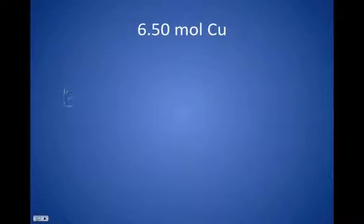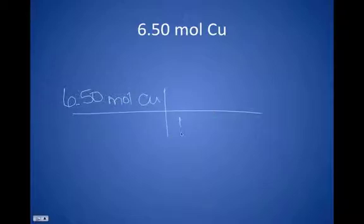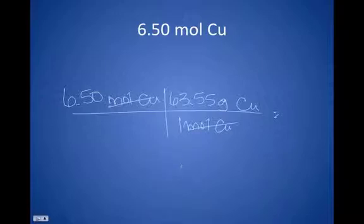Next up, we've got 6.5 moles of copper, converting that to mass. Each mole of copper has a mass of 63.55 grams of copper. Cancel that mole of copper, and you just end up with 6.5 times 63.55, and you get, in correct sig figs, 413 grams of copper.